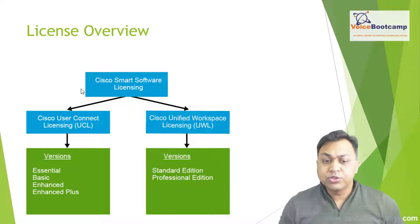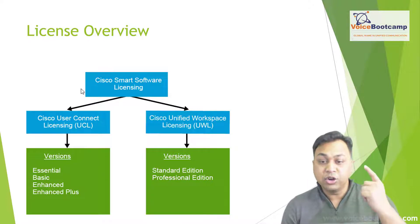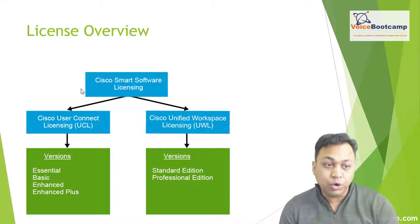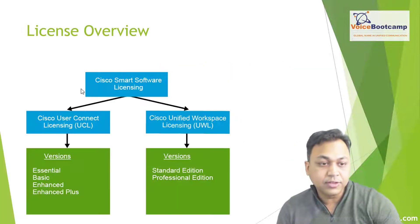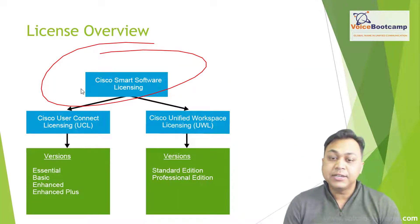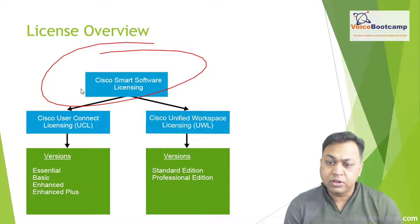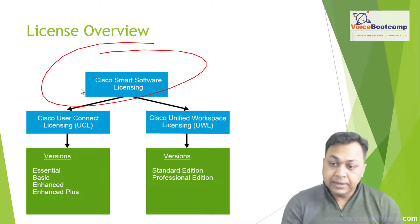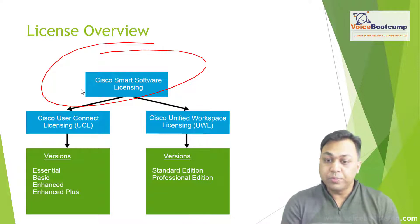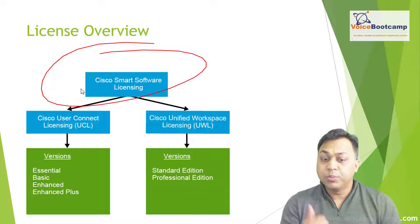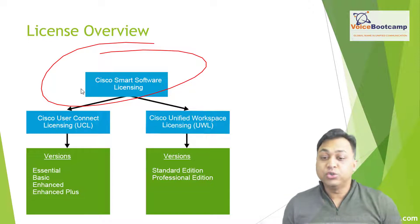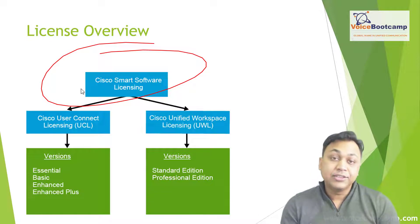Cisco Smart Software Licensing includes a hosted Cisco SSM web portal that you access by going to the Cisco website. You will have to create your own Smart Licensing account — also called a Cisco Smart Account — and then register your license through that web portal, where an organization's collaboration application entitlements and licenses are tracked.